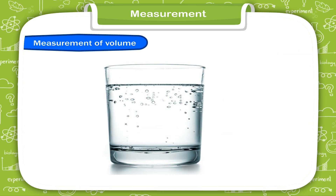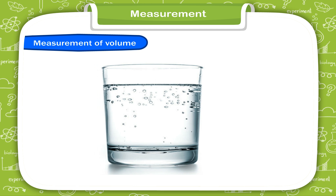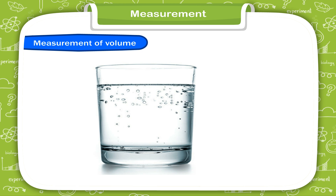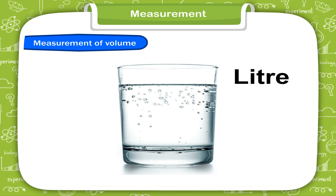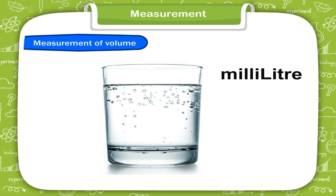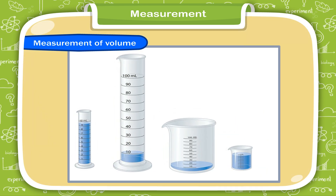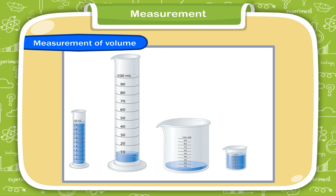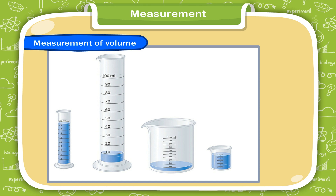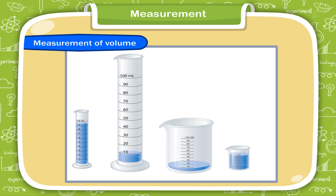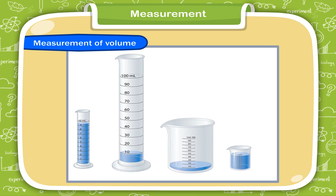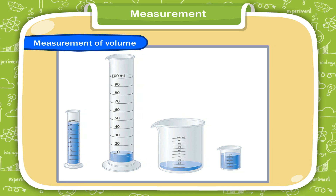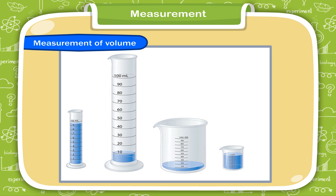Measurement of volume. Volume is the space occupied by a liquid. The standard unit of volume is litre. We measure smaller amounts in millilitres. The volume of a container tells us its capacity. The capacity of a container is how much liquid it can hold. A larger container can hold more liquid than a smaller container, so it has greater capacity.